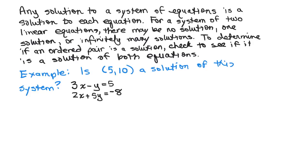Let's try it. First we'll try 3x - y = 5. We're going to put in 5 for x and 10 for y. I have 15 minus 10 equals 5. Yes, that's true. So (5,10) is a solution of 3x - y = 5.